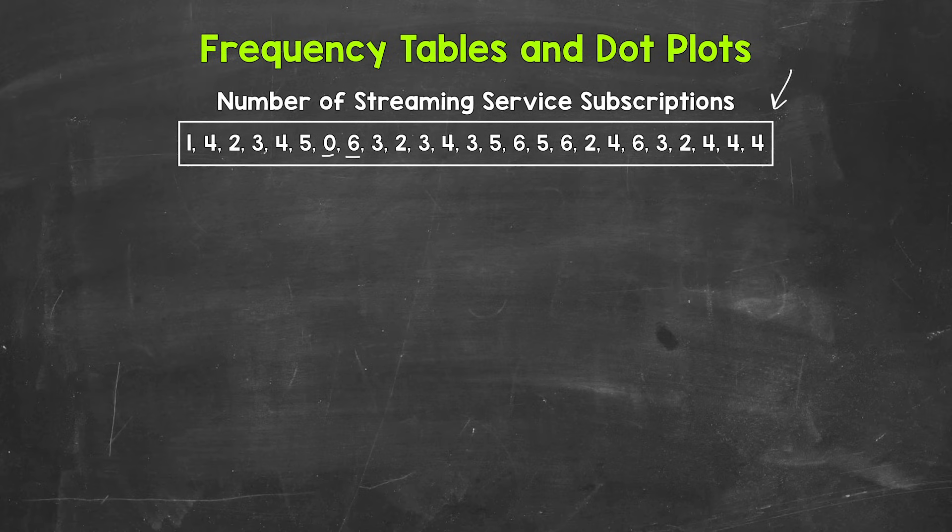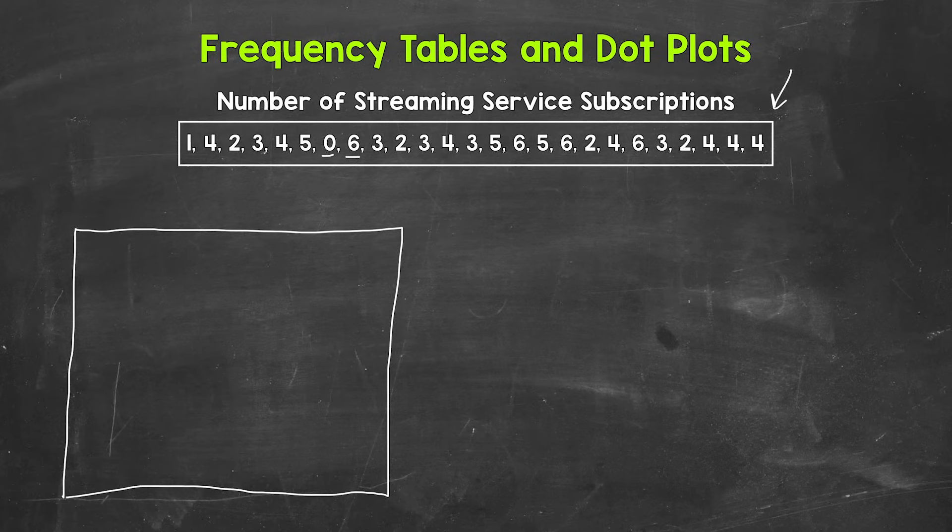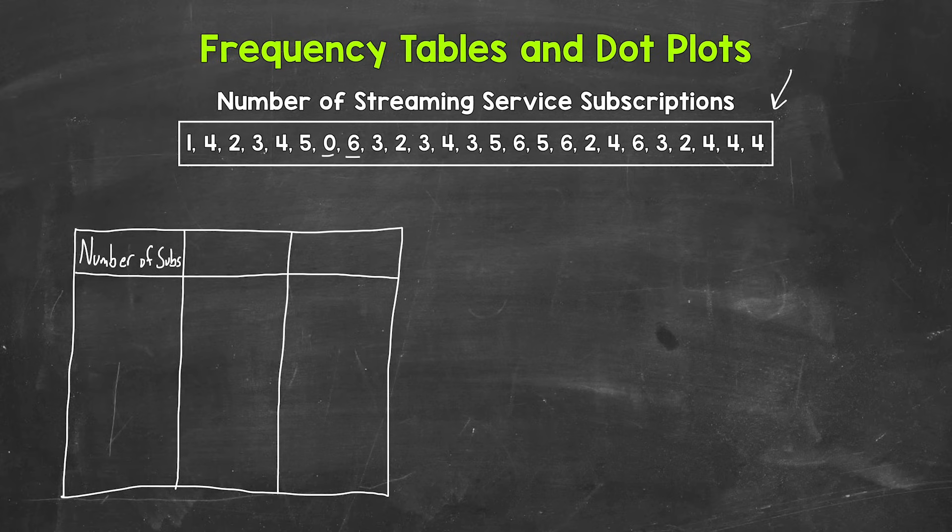Now let's draw our table. So I will start with the outside here and then three columns and a row up top for the column headers, the column labels. Let's start with the column on the left, which will always be the column that is specific to the data we are working with. Here we have the number of streaming service subscriptions. So I'm going to put number of subs for short. So that's our number of subscriptions column.